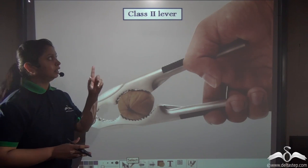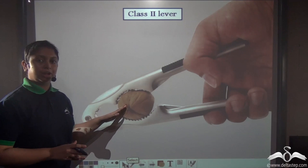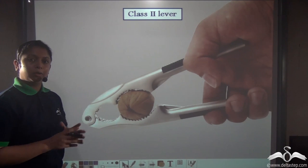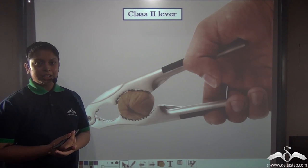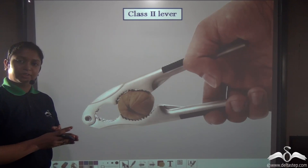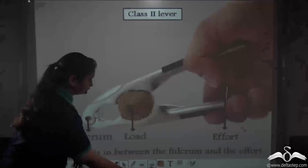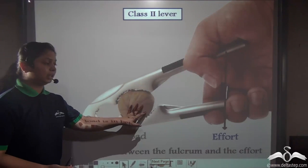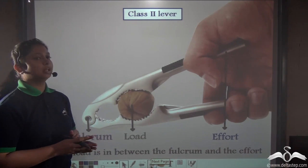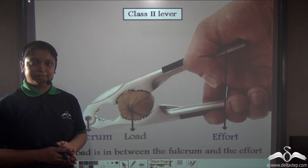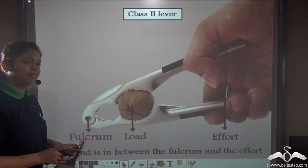You are familiar with class 2 levers. In class 2 levers, the fulcrum is located at one end, the load is located in the middle, and the effort is located at the other end. The load is always in between the effort and the fulcrum — this is the special characteristic of class 2 levers.